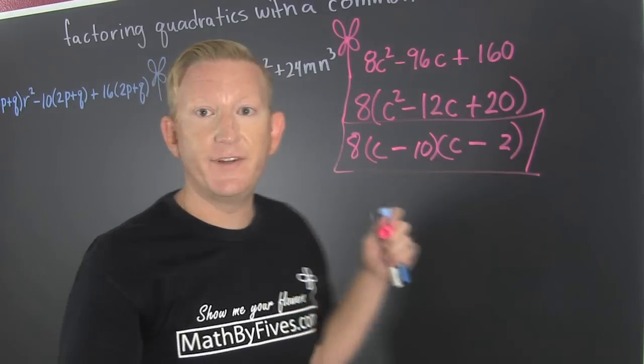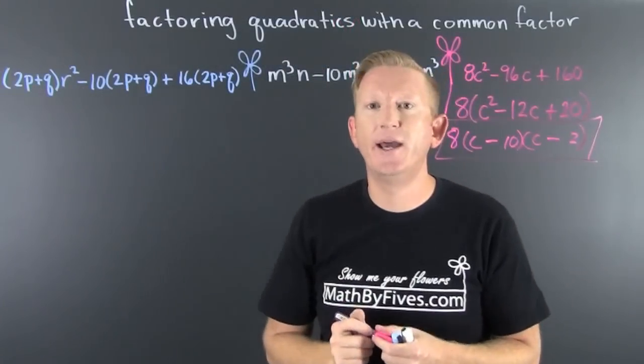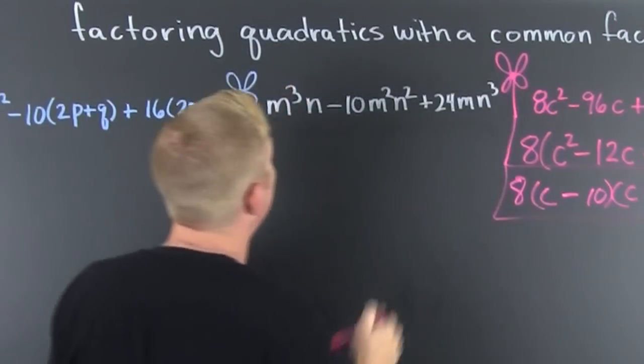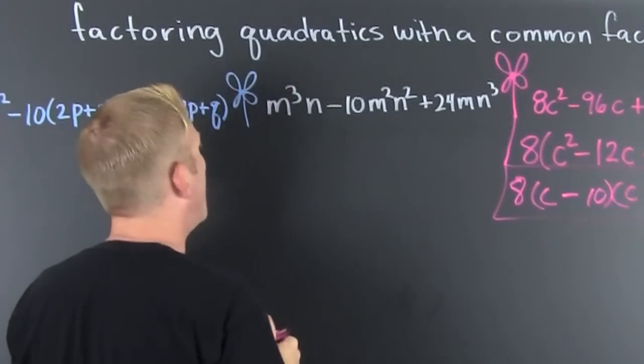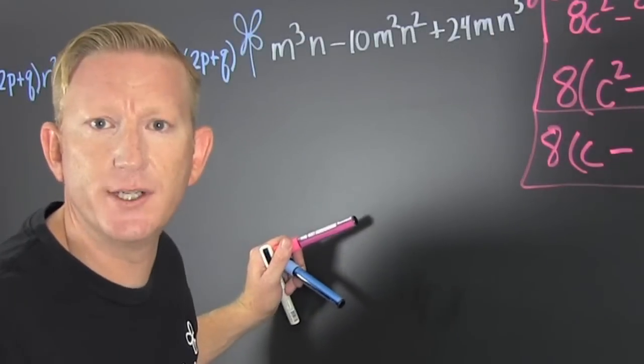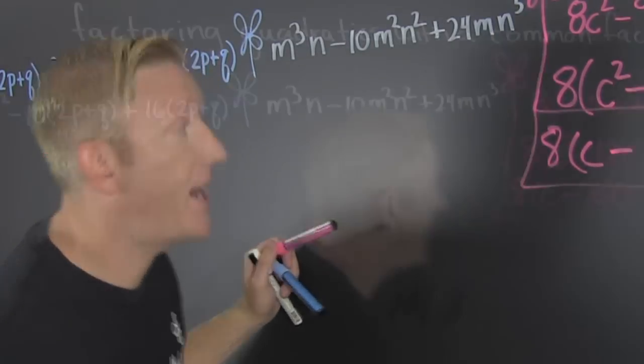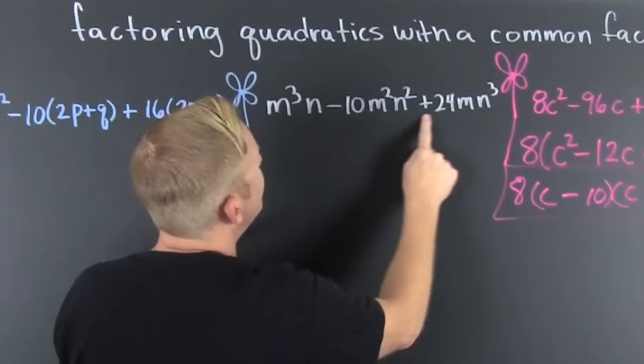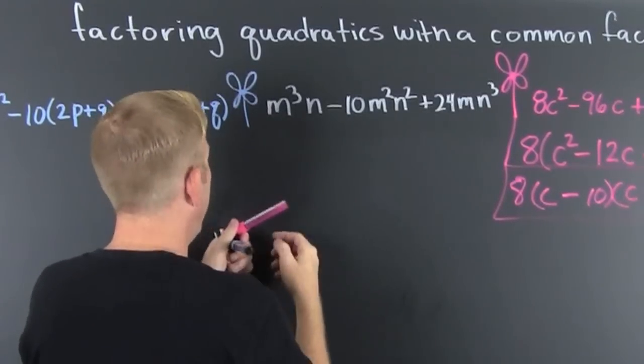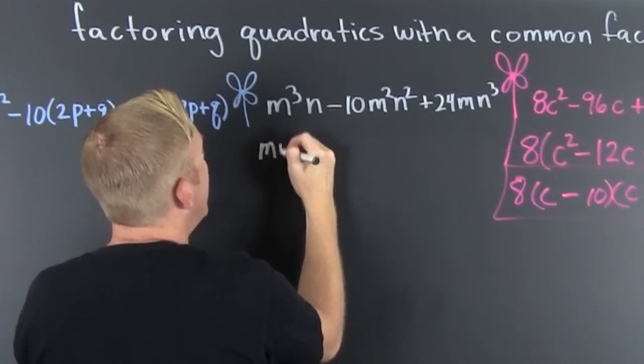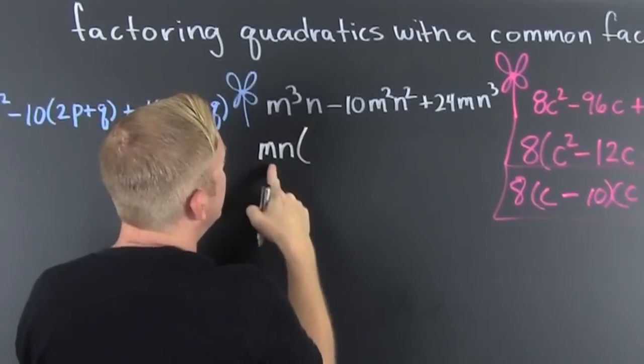Box and flower. Let's go ahead and go to this middle example. We want to take out the common factor first. The first rule of factoring: never talk about factoring. After that, take out the common factor. Looks like it's gonna be an M and an N, so I'm going to factor out an MN.